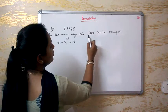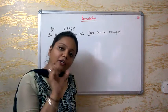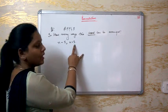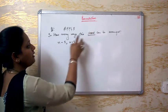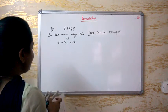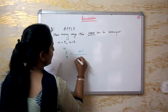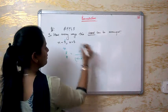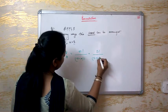We can arrange all 5 alphabets. They have said we have to arrange the whole word, that is why R is also 5. So our formula is NPR, which equals N factorial upon N minus R factorial. So this becomes 5 factorial upon 5 minus 5 factorial.